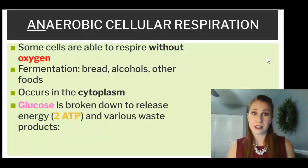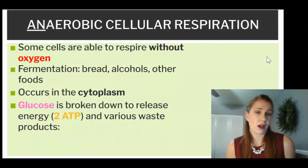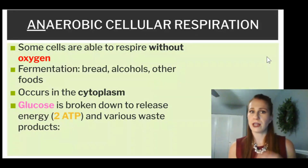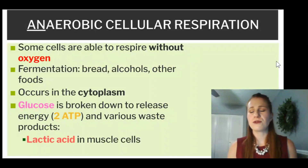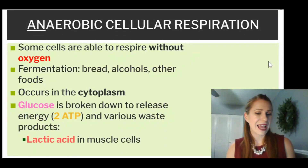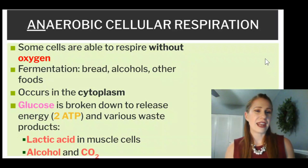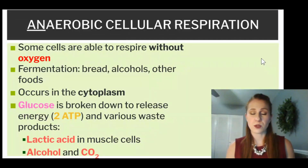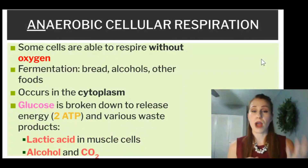Glucose is broken down still — the process is largely the same, except without oxygen. There's no mitochondria and no oxygen, but we take glucose and break it down and release energy as ATP, and then two waste products. Lactic acid is a waste product of our muscle cells, and alcohol and CO2 is a waste product when we're making something like beer, or wine, or bread.